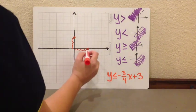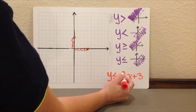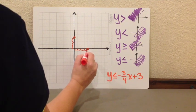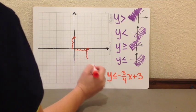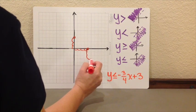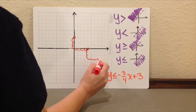And I can keep doing this. Again, my rise is negative 3, so I go down 3. 1, 2, 3. And my run is 4, so I move forward to the right. 1, 2, 3, 4.